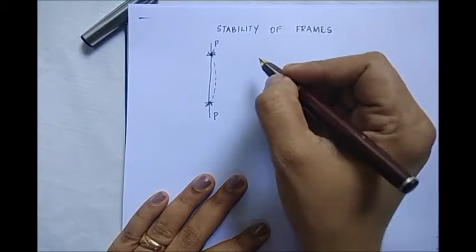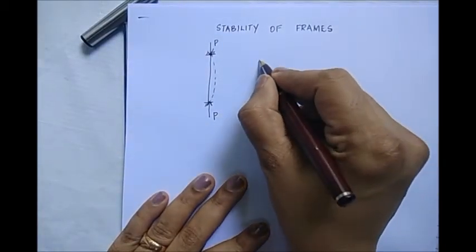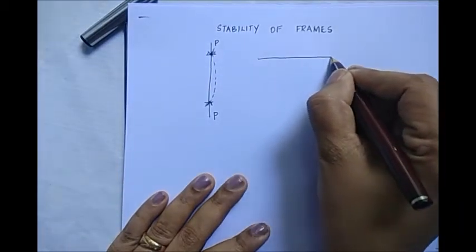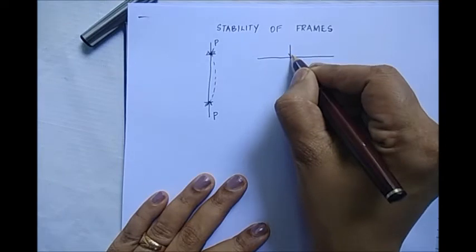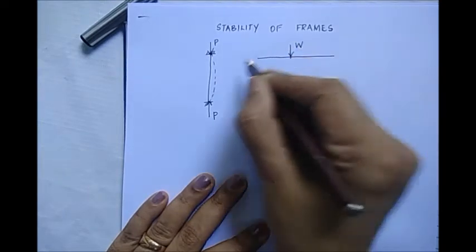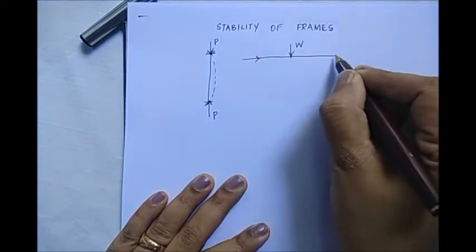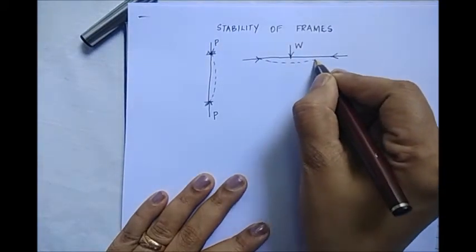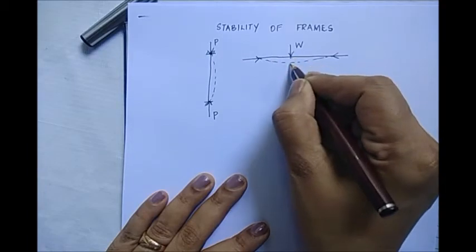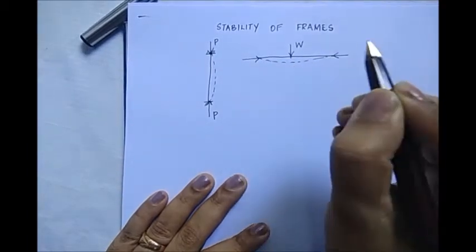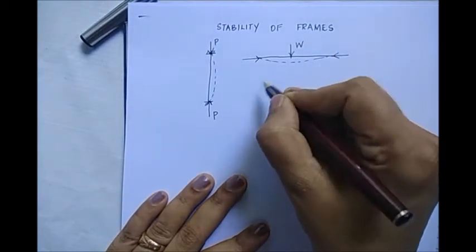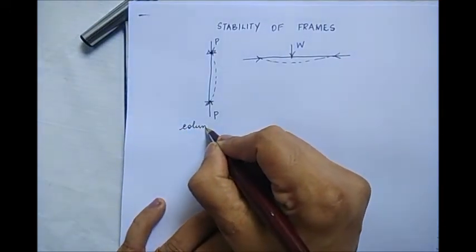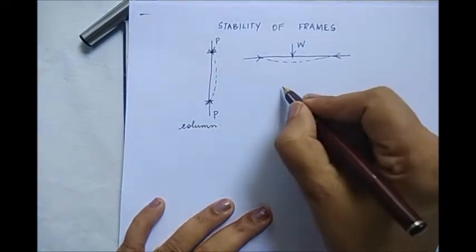Now when a column and a beam is combined, that is when a structural member can undergo the combined effect of bending and buckling, we call that - this was a column and this is a beam column.